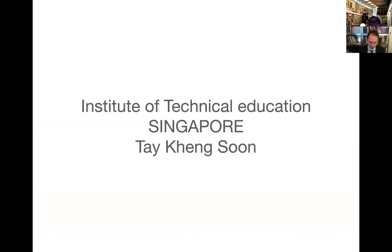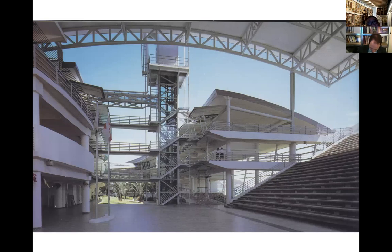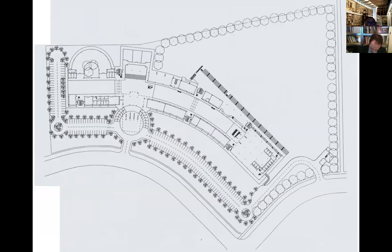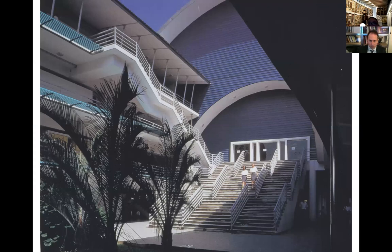Here is another project taking us into the public sphere — an Institute of Technical Education building by Tay Kheng Soon, one of my mentors. Looking at the sectional drawing it's simply understood: a secondary brise-soleil that controls the sun before it reaches the main training rooms. From the floor plan you can see how simple it is — a single cell arrangement with a lot of open space. But this brings me to the main point: how do we deal with what we can call the tropical city and architecture within it?